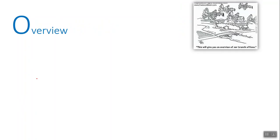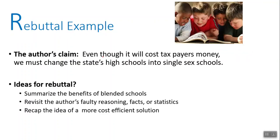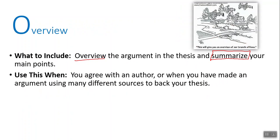The next type is overview. For an overview, you overview the argument and the thesis and summarize your main points. This is basically a summary conclusion where you overview all your main points. It's a little different in a persuasive essay than in an informative essay because you're overviewing the argument in order to persuade people. I usually recommend that in a persuasive essay, if you do an overview, you combine it with one of the other types of conclusions — either a rebuttal or one of the upcoming types.